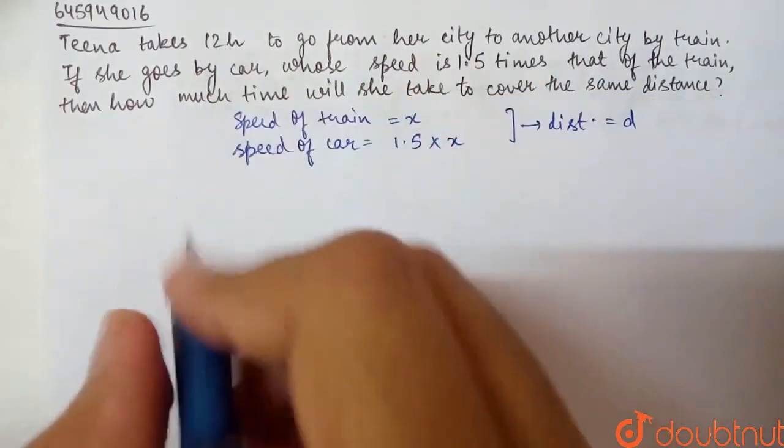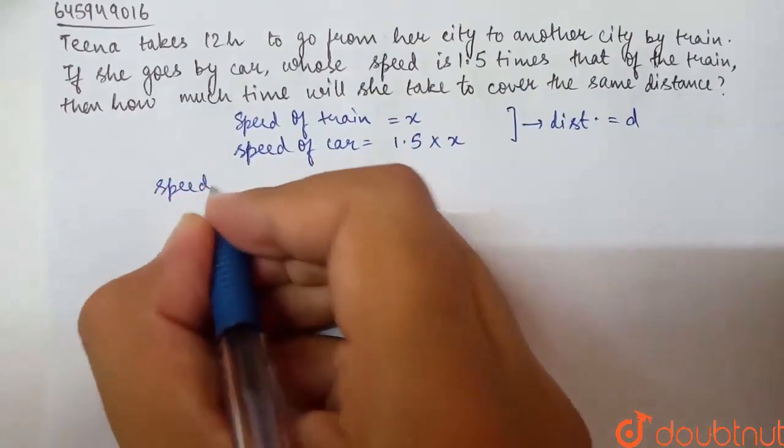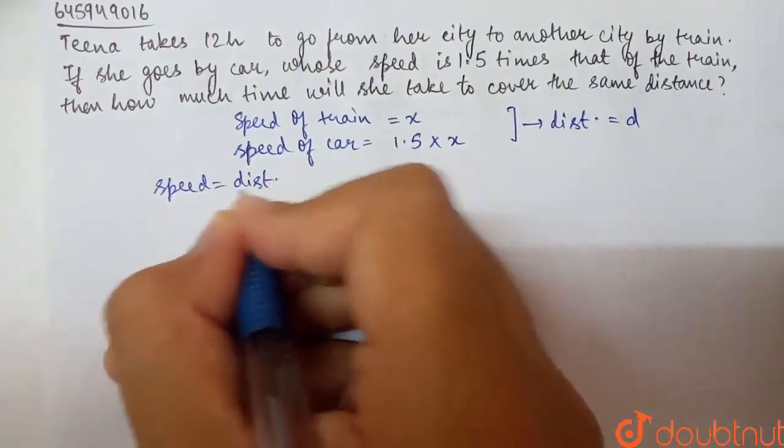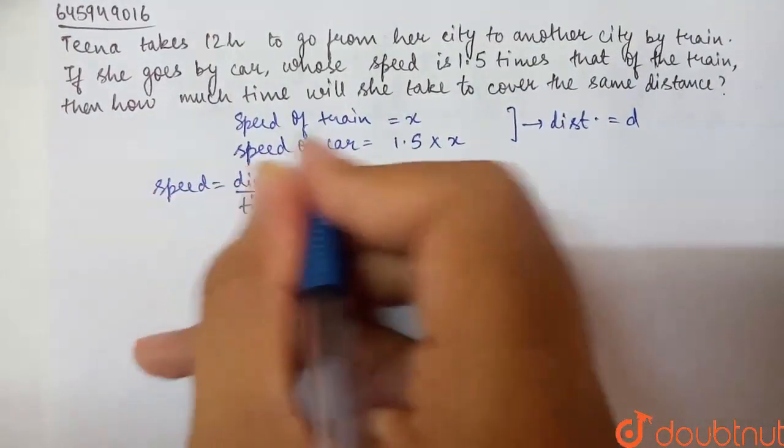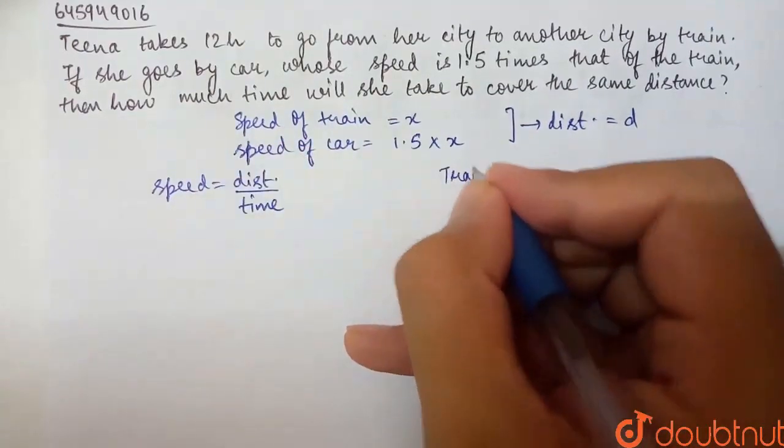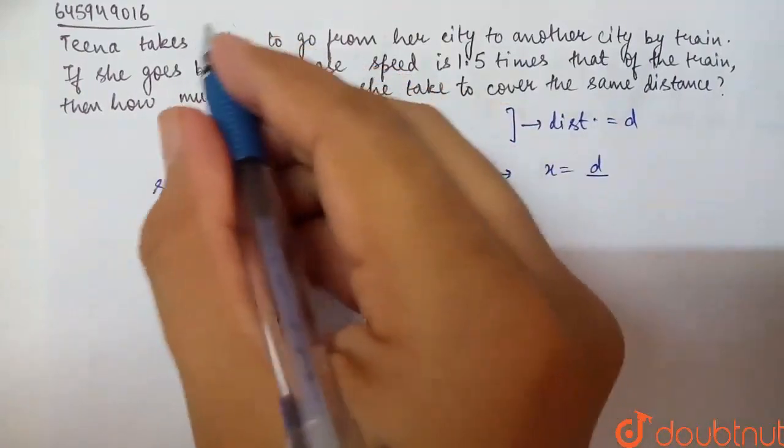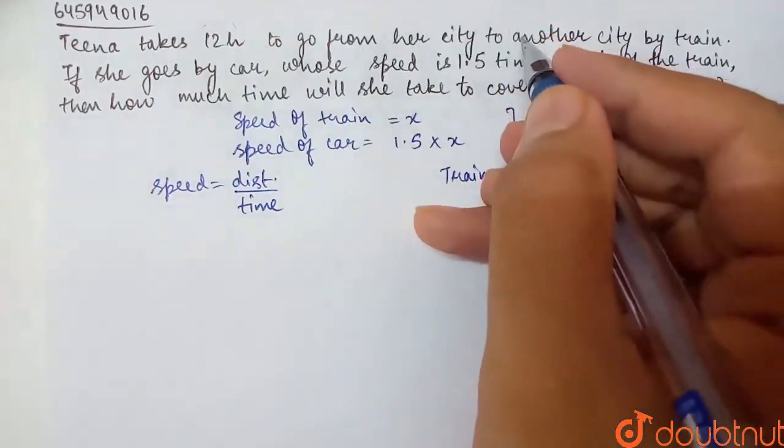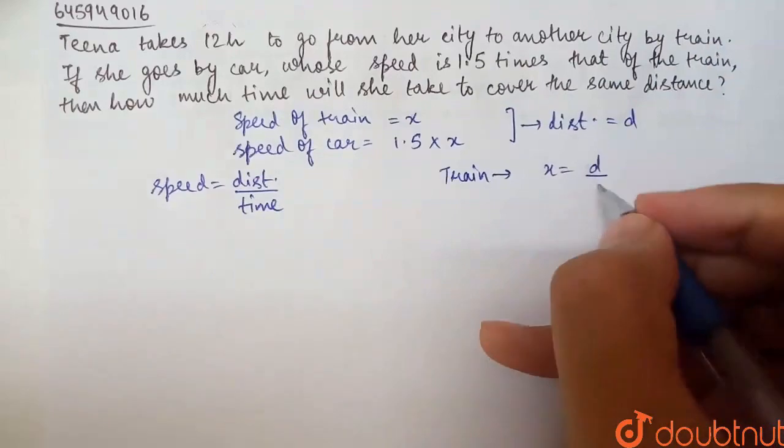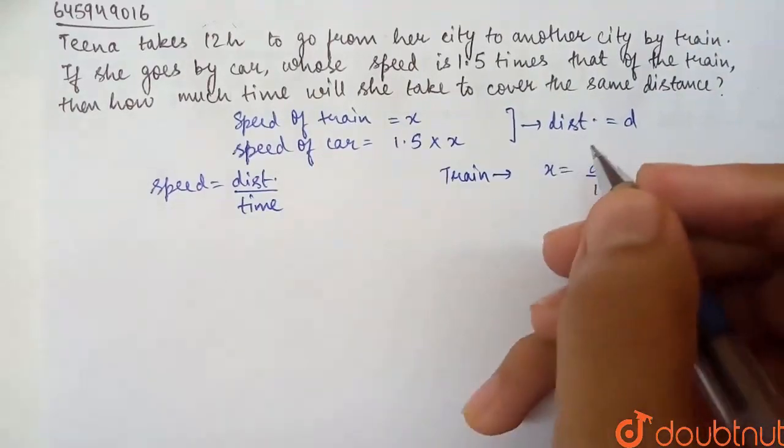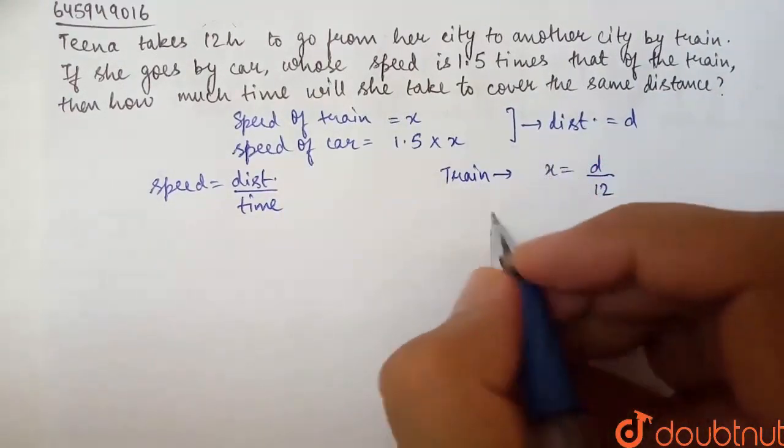Time is given as 12 hours. Now, speed equals distance over time. So when we talk about the train, speed of train, that is X, equals distance over time. It takes 12 hours from one city to another by train, so time is 12 hours. We're talking about hours, and the answer will be in hours.